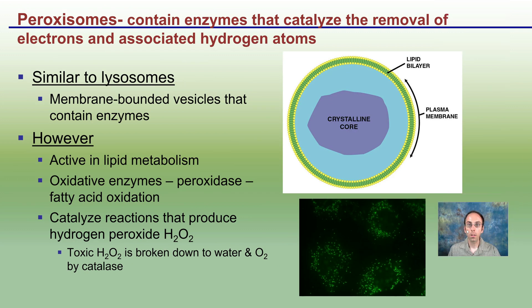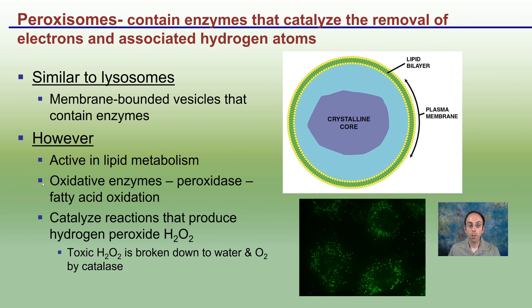Some of these little protein structures contain enzymes — enzymes being a specific type of protein. Looking specifically at the peroxisomes, they catalyze the removal of electrons and associated hydrogen ions. Peroxisomes have their own membrane creating a little vesicle, similar to a lysosome, containing enzymes. They are active in lipid metabolism — that's the breakdown of fats — and have oxidative enzymes, or peroxidases, for fatty acid oxidation. They catalyze reactions to produce hydrogen peroxide (H₂O₂), which is very toxic and is broken down into water and oxygen gas by the catalase enzyme.